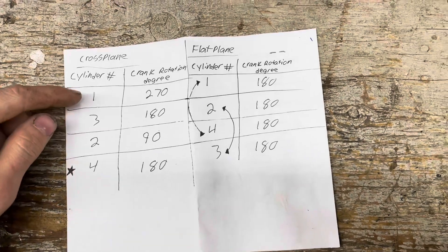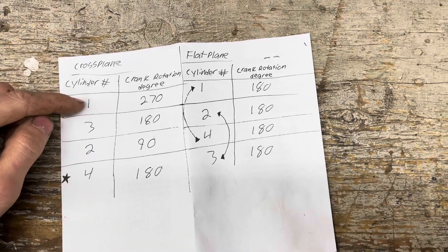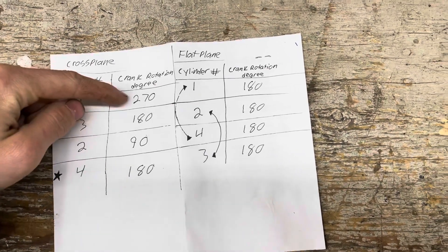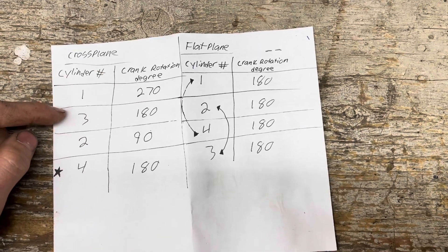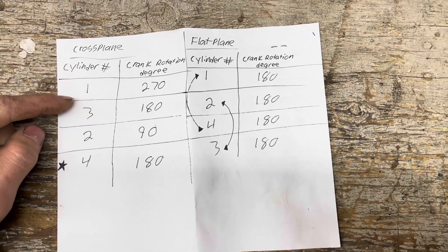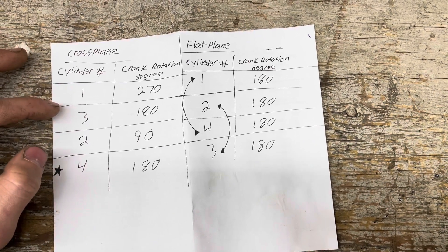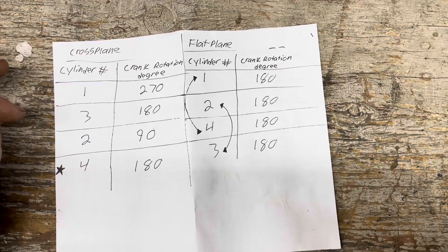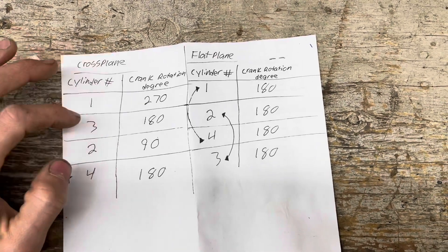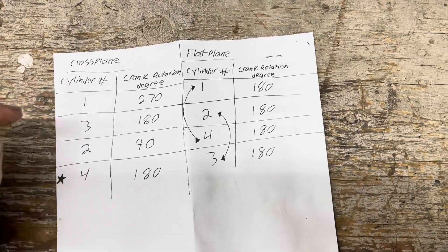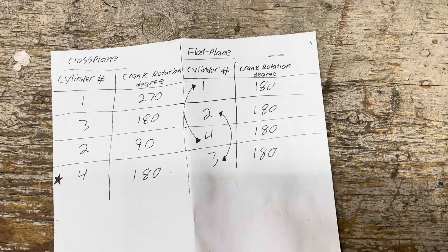So now that you can see the distance between firing on cylinder one and cylinder three, 270 degrees, that's a lot of time between firing events. I think that's the main reason why these bikes are a little bit harder to start, especially when they're cold or cold ambient temps. And this is going to be a major reason why their idle quality isn't as smooth as a traditional flat plane as well.